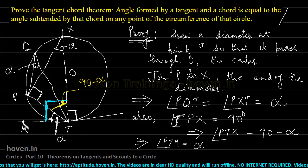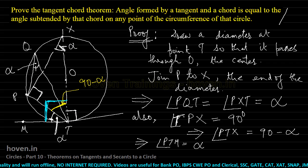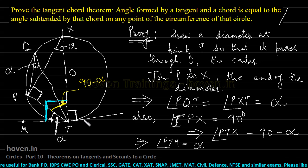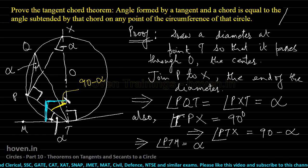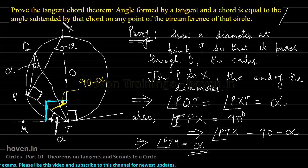This means the tangent-chord angle has been proved equal to the inscribed angle alpha. We drew a diameter, used the angle in a semicircle, brought alpha equal to alpha via the inscribed angle theorem, used the 90-degree perpendicularity of diameter and tangent, and deduced 90 minus alpha, leaving this part as alpha. This proves that the angle formed by a tangent and a chord equals the angle subtended by that chord on any point of the circumference.